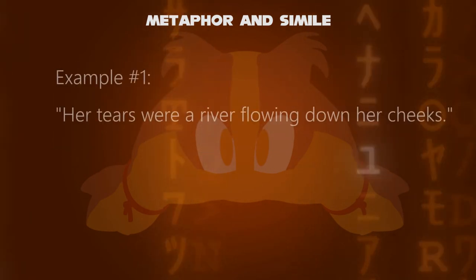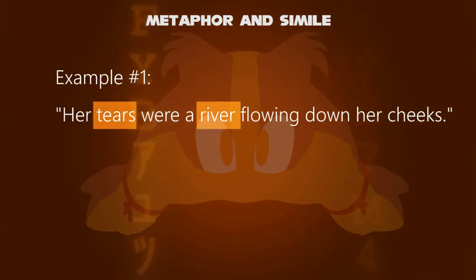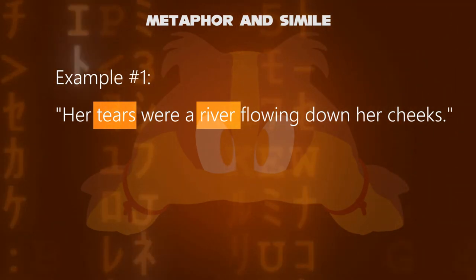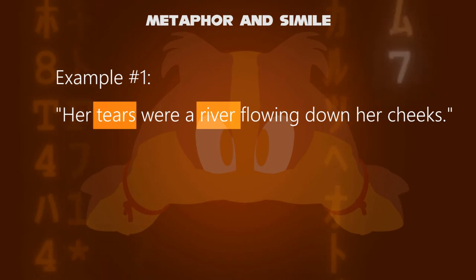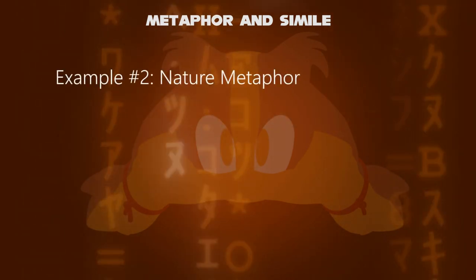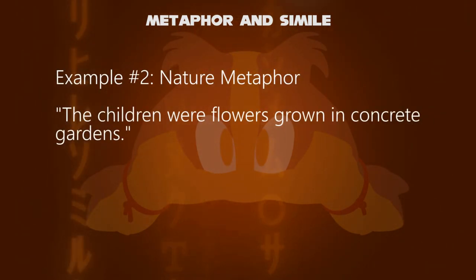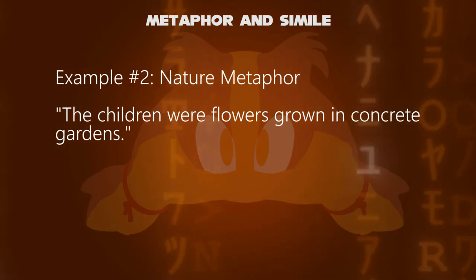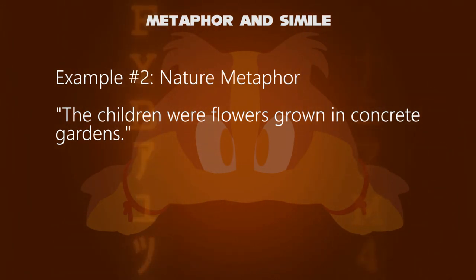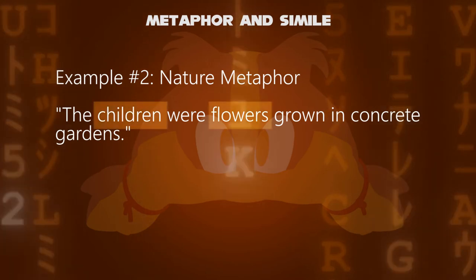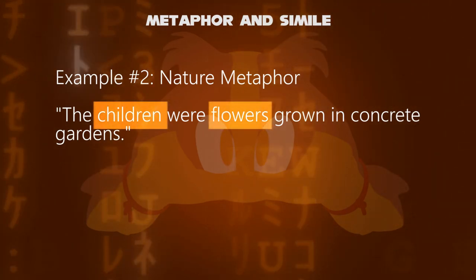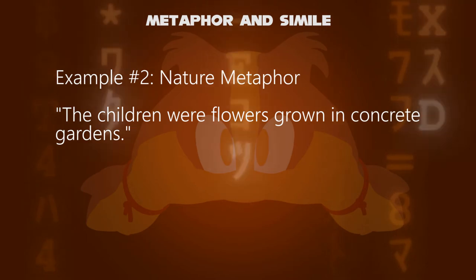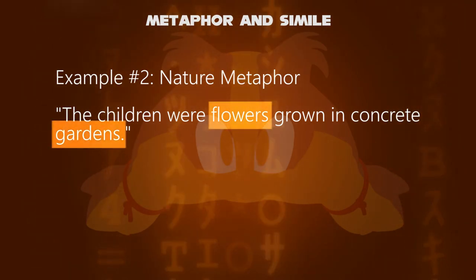For example: 'Her tears were a river flowing down her cheeks.' River and tears aren't very alike, but they do have one thing in common. How about another example? 'The children were flowers grown in concrete gardens.' This is called a nature metaphor. Children and flowers aren't alike, but flower and garden have a good relation.